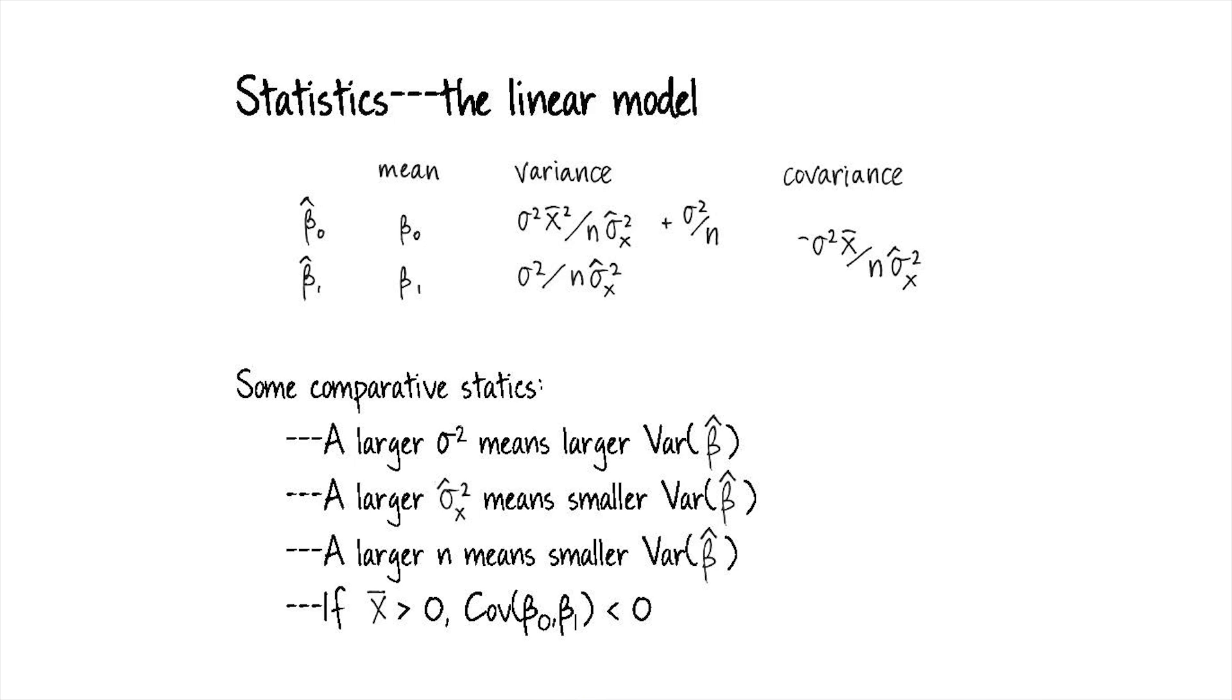If we have a larger variance of x, in other words our x's are more spread out, that's going to lead to a smaller variance in β̂. And a larger n also means a smaller variance of β̂.